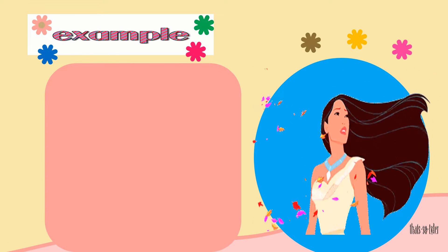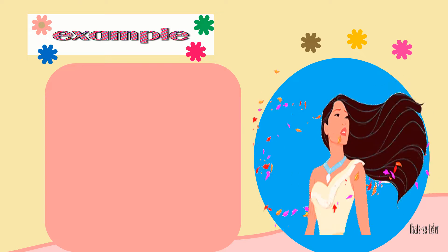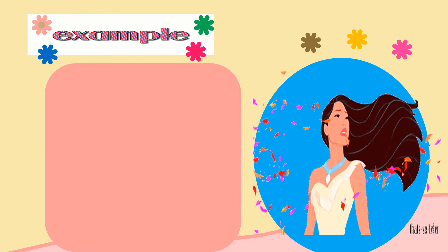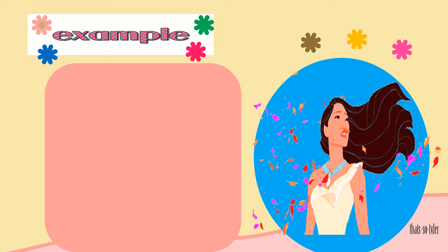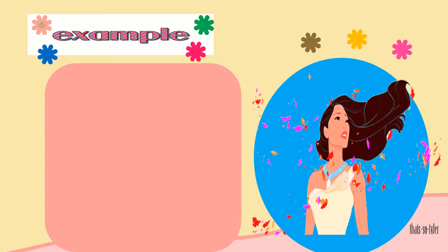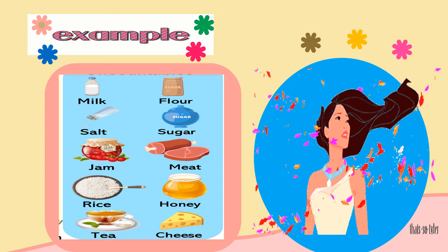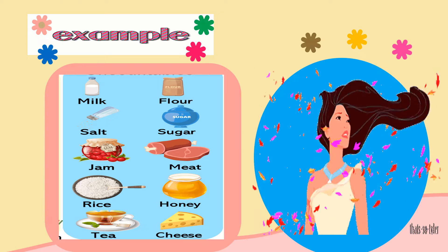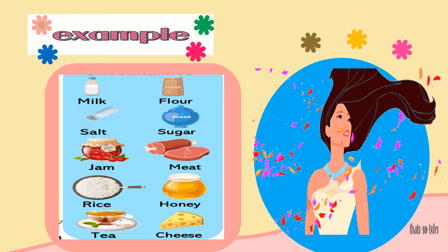Here are other examples of mass nouns. Do you know her? Yes, she's the character from the movie Pocahontas, the lead character. What are the mass nouns that you can see in this picture? Exactly — you have the hair and the wind. These are examples of mass nouns. Now the person herself is a count noun, of course. Other examples of mass nouns: you have milk, flour, salt, jam, rice, tea, sugar, meat, honey, and cheese.